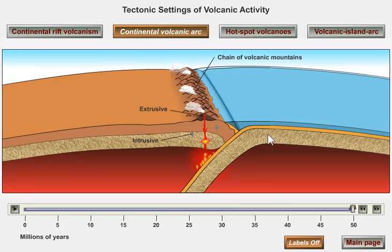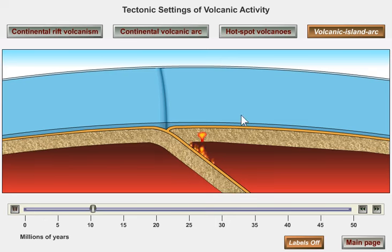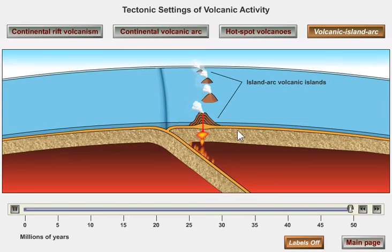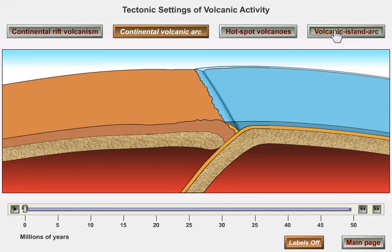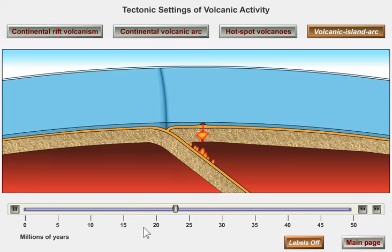Another scenario is instead of ocean floor subducting underneath the continent, we could have ocean floor subducting under other ocean floor. Same process — we're going to subduct the ocean floor, generate magma, and a whole series of volcanic islands is going to pop up in the ocean parallel to the trench. You see how it's very similar to the continental situation. The only difference is that the volcanoes are popping up out of the ocean parallel to the trench instead of on land. Examples of this would be the Aleutian Islands, the Philippines, or the Marianas Islands in the Pacific. These are all what we call volcanic island arcs.